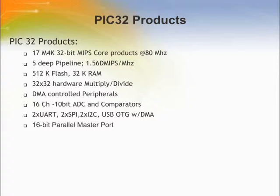The PIC32 family has 17 products built around the MIPS M4K core running at 80 MIPS. It has a 5-stage pipeline and achieves a throughput of 1.56 Dhrystone MIPS per MHz. It offers large amounts of flash and data RAM, a DMA controller for all peripherals, multiple channels of ADC, UARTs, SPI, I2C, USB OTG with dedicated DMA, and a 16-bit parallel master port to communicate with 16-bit peripheral devices.